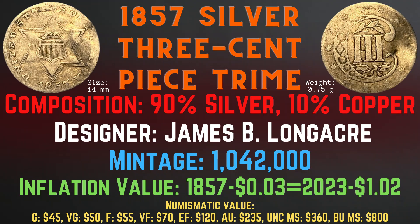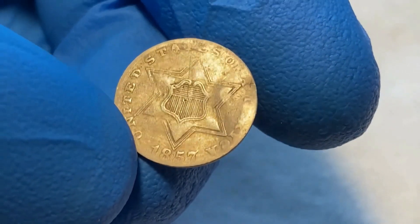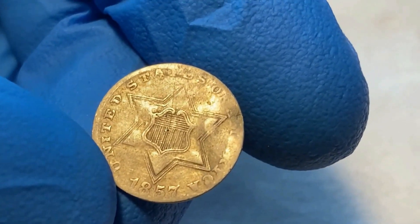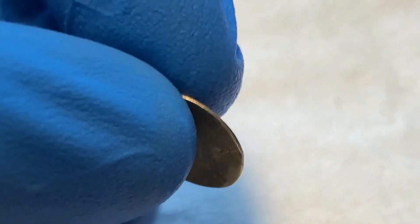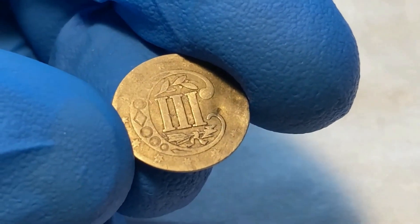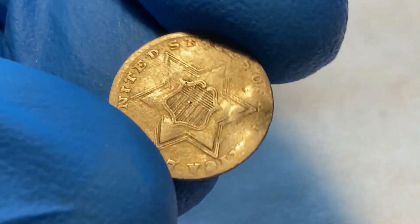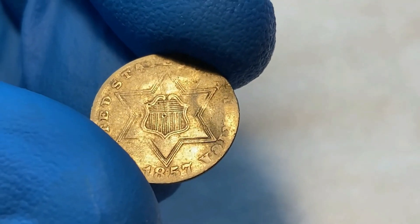Now let's take a closer look at the 1857 silver three-cent piece from my collection. This coin has quite a luster on the front, and the words, the star, the lines around the star, and the shield details are still quite visible. On the back, the details and stars are all clear. However, some of the higher areas are worn down. If I were to grade this coin, I would say it is in about uncirculated to extremely fine condition.